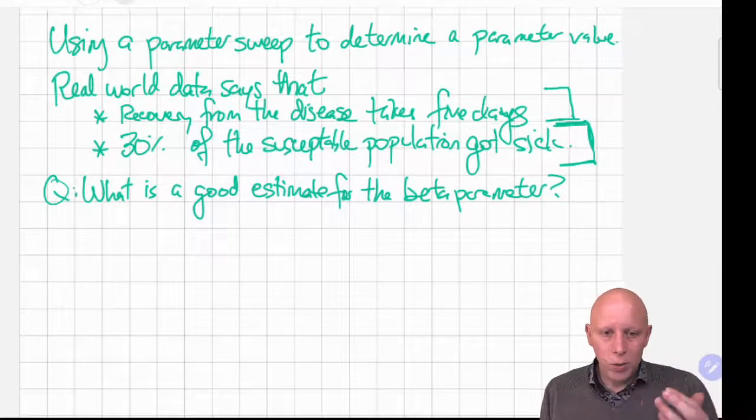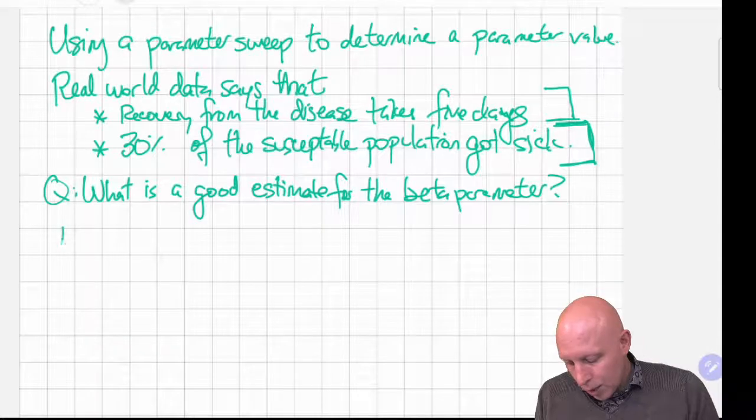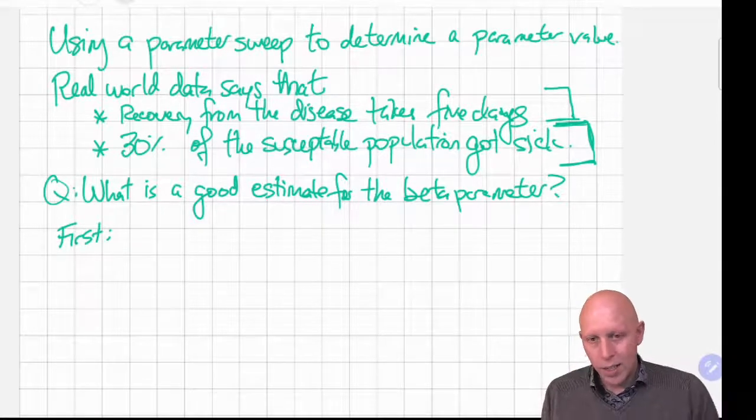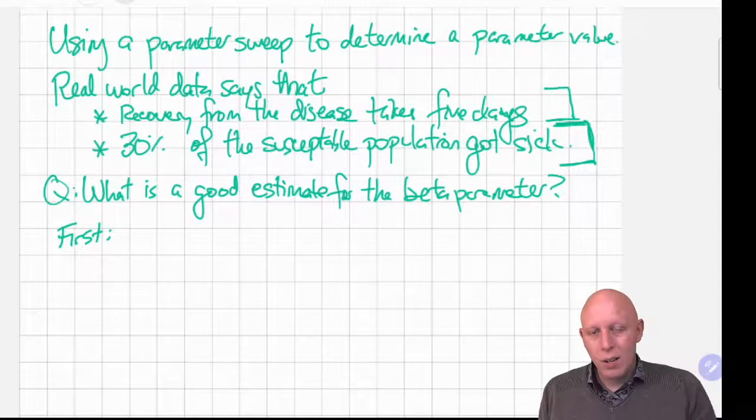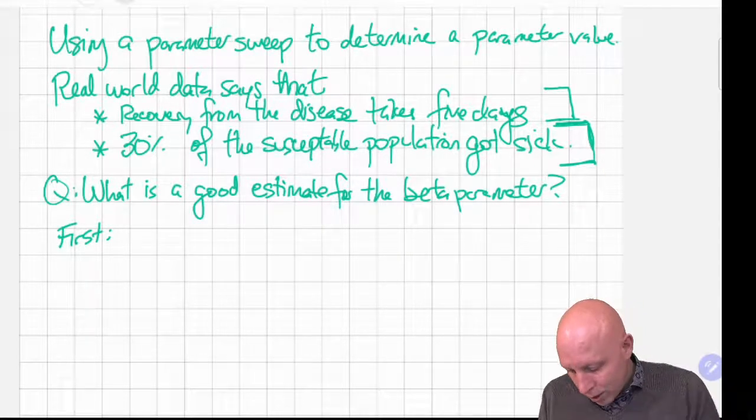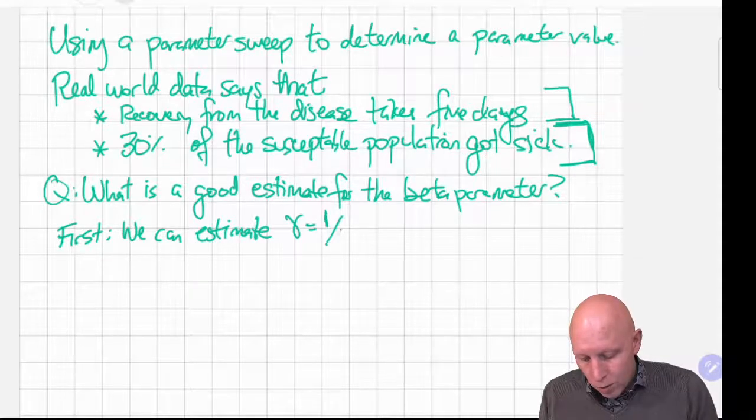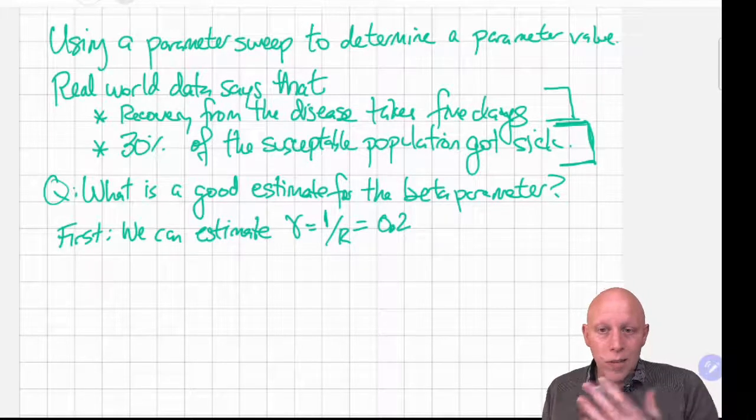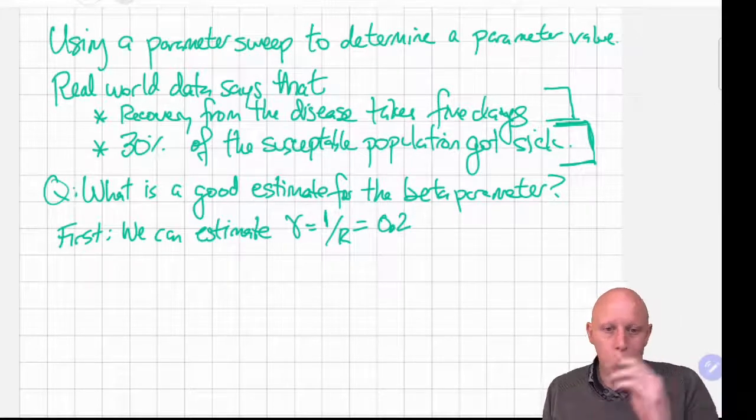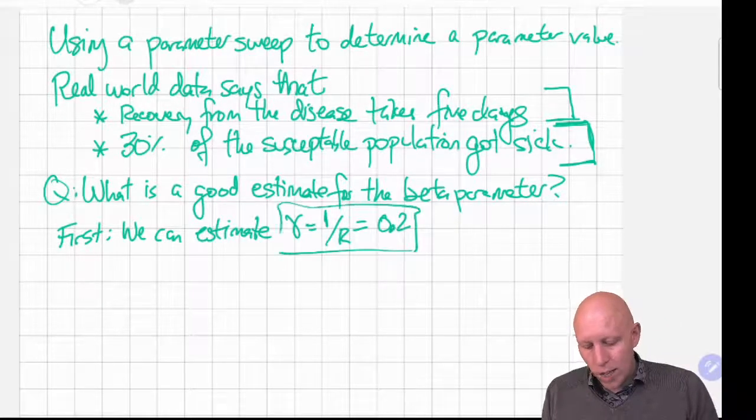So what we're going to do is run a simulation with a whole bunch of different beta parameters and figure out which one matches the data the best. The first thing we want to say is that we can use our heuristic about what gamma is with the information about the recovery. First we can estimate gamma to be 1 over r, 0.2, because if it takes five days to recover from the disease then of the current people who have the disease one-fifth of them will get better today. So we're going to use this as our estimate for gamma.